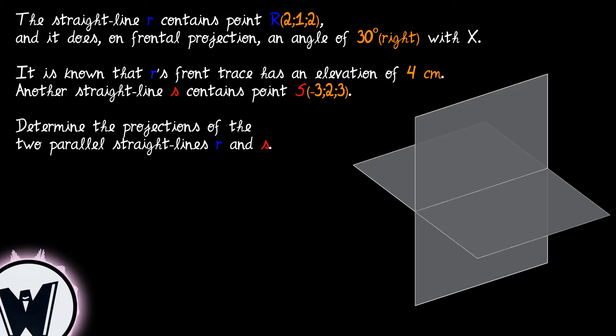Another straight line S contains point S with coordinates minus 3, 2 and 3. Determine the projections of the two parallel straight lines R and S.